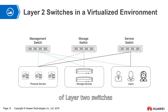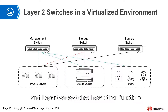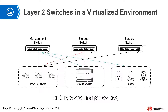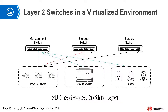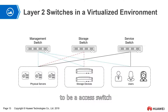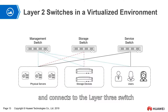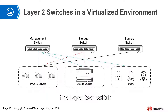These are the functions of layer 2 switches, but layer 2 switches have another function. The ports on a layer 3 switch are limited and costly, and when there are many devices that cannot all connect directly to the layer 3 switch, we use a layer 2 switch as an access switch. Every device first connects to the layer 2 switch, then all connections converge in the layer 2 switch and connect up to the layer 3 switch. This is also the role of the layer 2 switch.